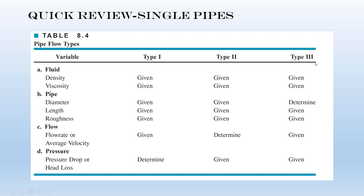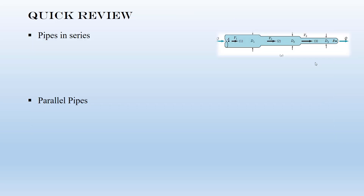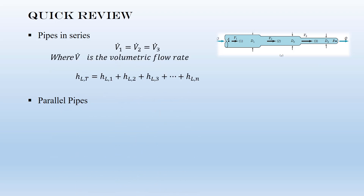For type 2 and type 3, you need to use the iteration method, or you can use graphs from chapter to find the unknown parameters. For pipes in series, the mass flow rate is constant, and if we assume incompressible flow, then the volumetric flow rate will also be constant.